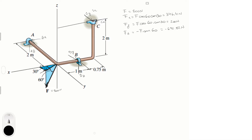Now we can write the sum of forces in X, Y, and Z. In X: 346.41 + AX + CX = 0. In Y: 200 + BY + CY = 0. In Z: −692.82 + AZ + BZ = 0. We have six variables and only three equations, so we need more. I'll call these equation one, two, and three.